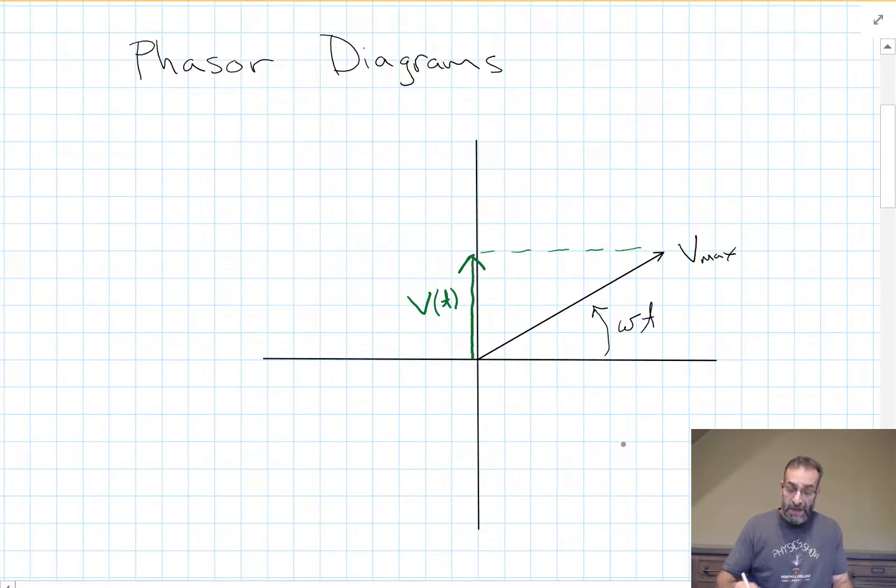And we can do this with both voltage and current. We can also draw a vector here that represents the current and the projection onto the vertical axis would be the instantaneous current through our device. These phasor representations of voltage and current rotate with a constant angular speed, omega. And at any given time, omega times t gives us the location, the angle that that vector makes with the horizontal axis. These phasor diagrams are useful in analyzing AC circuits because the voltage and the current don't always hit their maximum values at the same time.